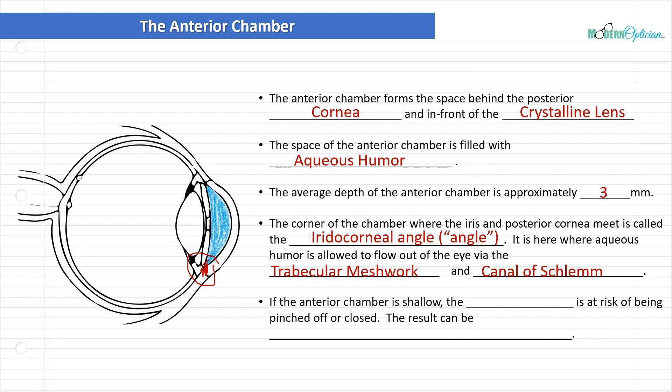If the anterior chamber is shallow, meaning smaller than that three millimeters we talked about, the angle is at risk of being pinched off or closed. This can result in closed angle or acute angle closure glaucoma. This is bad news. Sometimes people can have a smooshed eye. A lot of hyperopes have shorter eyes. That could be the reason for a shallow anterior chamber. Another common reason is lens changes. Sometimes if the crystalline lens is starting to change shape due to cataract formation, it can apply pressure towards the iris, pushing the iris forward and pinching off the angle.